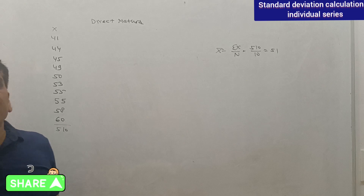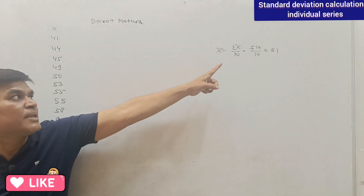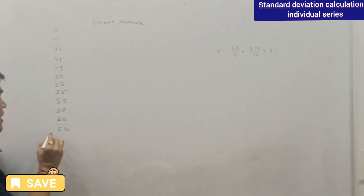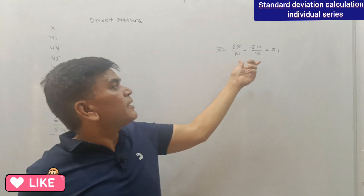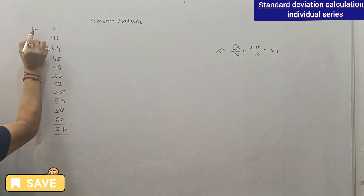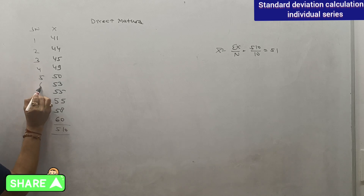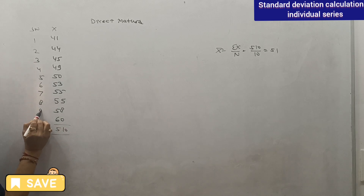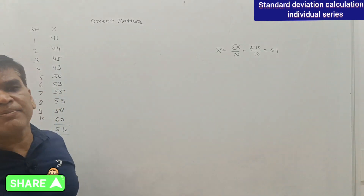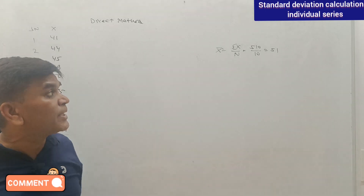The value of arithmetic mean is sigma X divided by N. Sigma X is 510, N is 10, giving us serial numbers 1 through 10 — total 10 items. So 510 divided by 10 equals 51. The arithmetic mean is confirmed as 51.